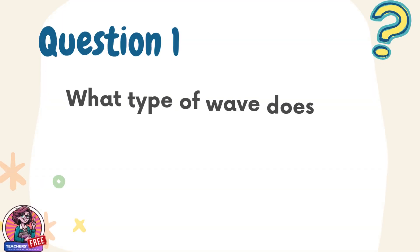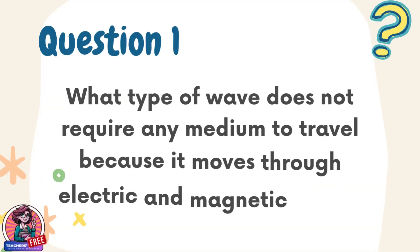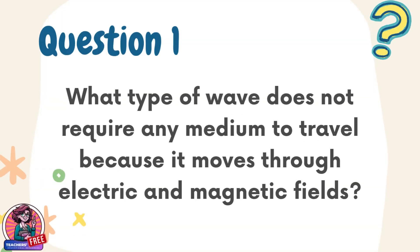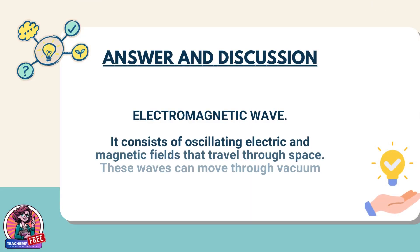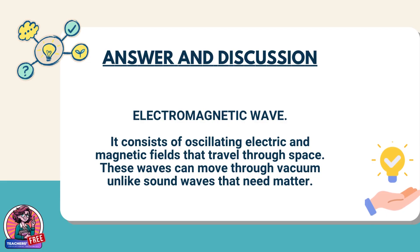Question 1. What type of wave does not require any medium to travel because it moves through electric and magnetic fields? Answer: electromagnetic wave. It consists of oscillating electric and magnetic fields that travel through space. These waves can move through vacuum, unlike sound waves that need matter.